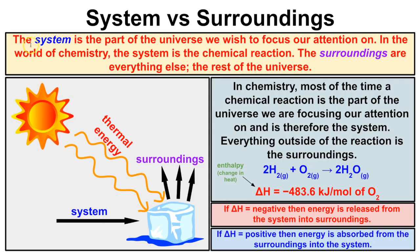Before we start talking about endothermic versus exothermic processes, we should probably start talking about the system versus the surroundings. Let's suppose that we throw a piece of ice out into the street on a hot sunny day and observe what's going to happen to this ice cube. Since we're observing this ice cube, this ice cube we can refer to as the system.